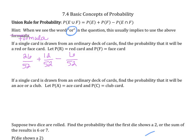Since we have common denominators, we combine our numerators. 26 plus 12 is 38, minus 6 is 32 out of 52. Reducing by dividing each by 4 gives us 8 thirteenths.